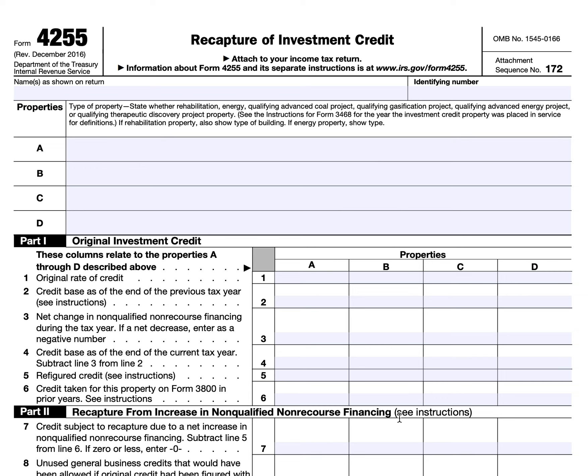The therapeutic discovery project grant is a little interesting. Under the Affordable Care Act Section 9023, there was a grant allowable for qualifying therapeutic discovery projects, and this form captures that recapture if applicable. If you're a taxpayer that's a partnership, S corporation, or other pass-through entity, you may need to see the form instructions on how to calculate the credit and then pass it down to your partners, shareholders, or beneficiaries. Just make sure you understand how to report that in your respective schedules and how that flows through on your respective income tax return.